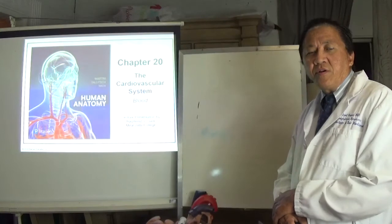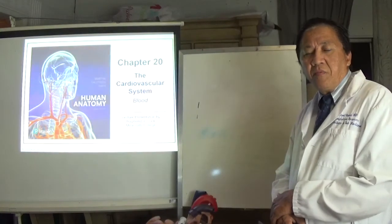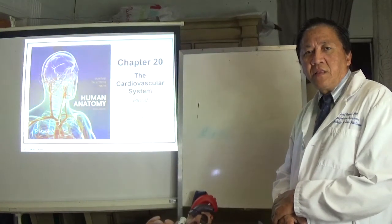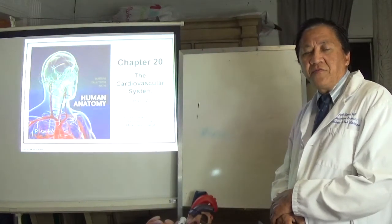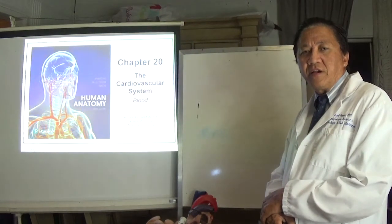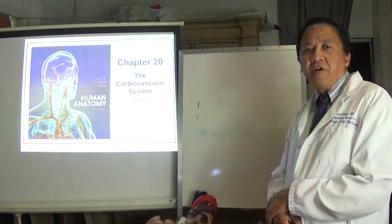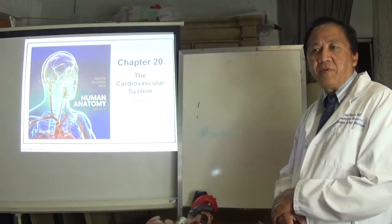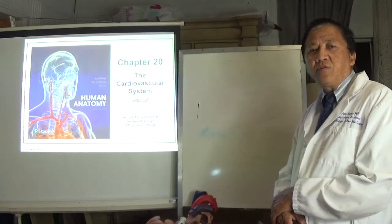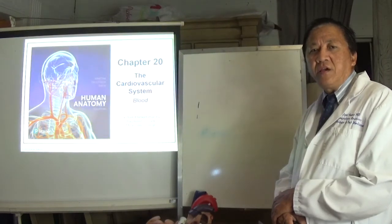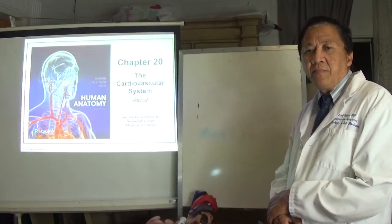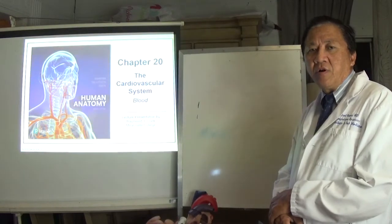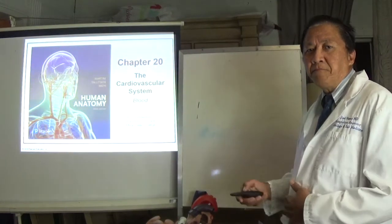We know the importance of the human blood. It is in the blood where you have the different cells such as red blood cell, white blood cell, and a fragment of a cell called platelet. Today we're going to talk about the important components of blood that are important in terms of the human body.